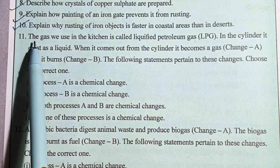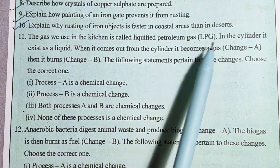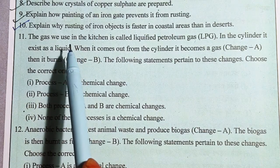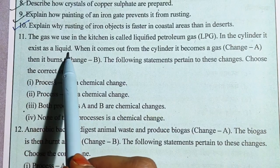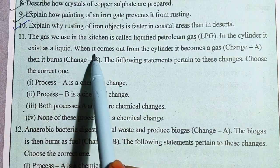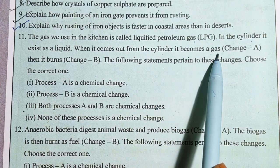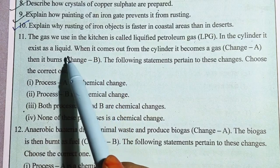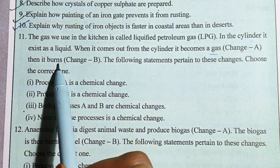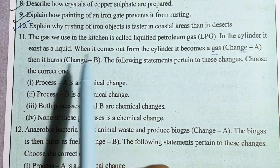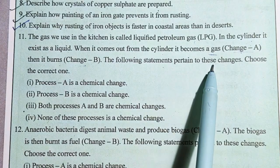Question number 11: The gas we use in the kitchen is called Liquefied Petroleum Gas (LPG). In the cylinder, it exists as a liquid. When it comes out from the cylinder, it becomes a gas — this is Change A. Then it burns — this is Change B.